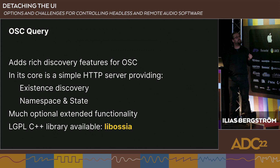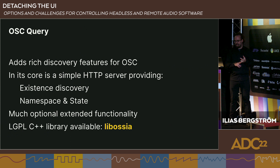OSC Query adds rich discovery features for OSC. At its core, it's a simple HTTP server which gives you discovery of the existence of servers on the network and discovery of their namespace and state. There's a library available — liboscpp — under LGPL. This is supported in quite a lot of visual software, though I haven't seen much audio software supporting it yet.